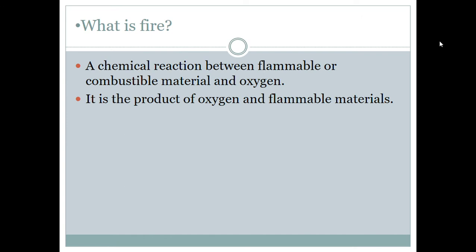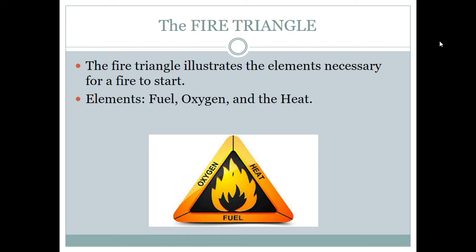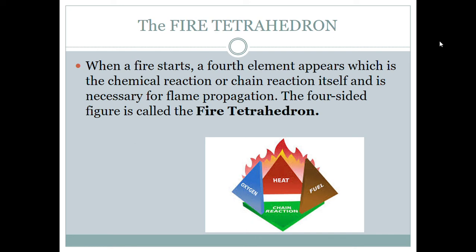Fire is a chemical reaction between flammable or combustible material and oxygen. This process converts the flammable or combustible material and the oxygen into energy. To understand more, you should know the fire triangle, which illustrates the elements necessary for a fire to start: oxygen, heat, and fuel. If these three are combined, a fourth element appears — the chain reaction itself — and it is now called the fire tetrahedron. The chain reaction is necessary for flame propagation.